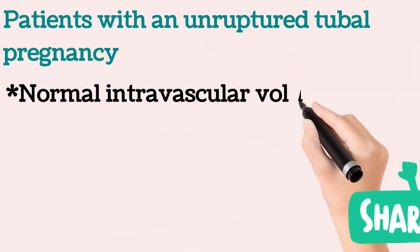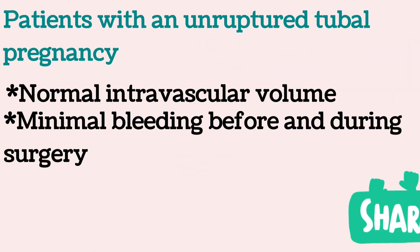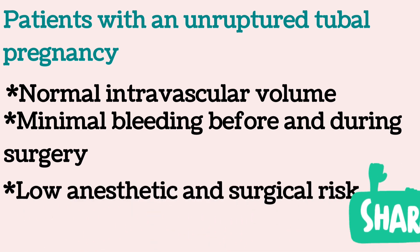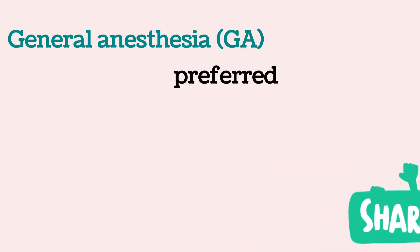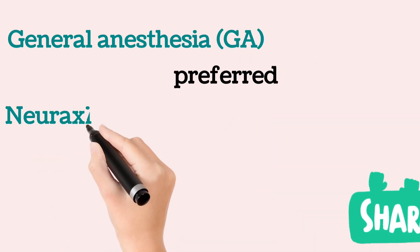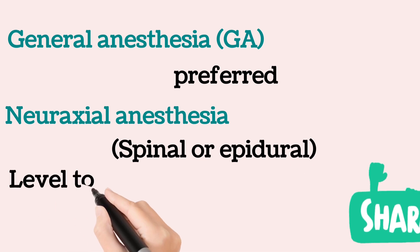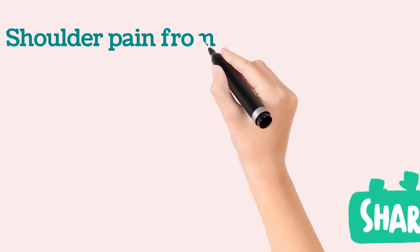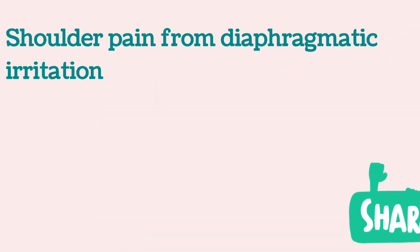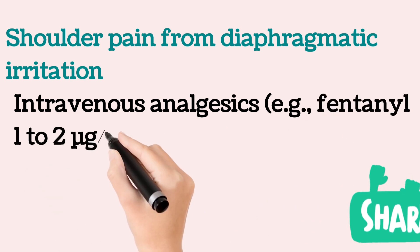Patients with an unruptured tubal pregnancy usually have normal intravascular volume, minimal bleeding before and during surgery, and low anesthetic and surgical risk. Although most patients may prefer general anesthesia, neuroaxial anesthesia with an upper sensory level of at least T4 may be an alternative in selected patients. Shoulder pain from diaphragmatic irritation may occur and can be treated with intravenous analgesics.